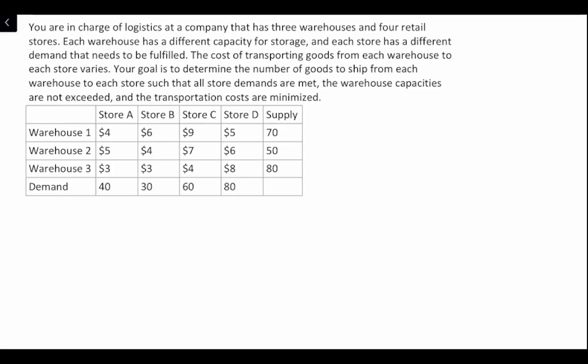You are in charge of the logistics at a company that has three warehouses and four retail stores. Each warehouse has a different capacity for storage and each store has a different demand that needs to be fulfilled. The cost of transporting goods from each warehouse to each store varies. The goal is to determine the number of goods to ship from each warehouse to each store such that all store demands are met, the warehouse capacities are not exceeded, and the transport costs are minimized.